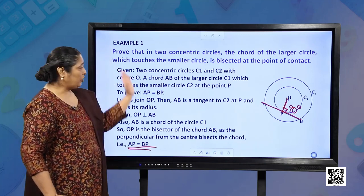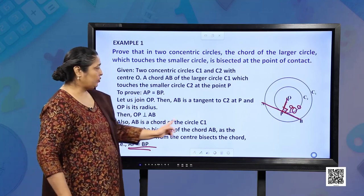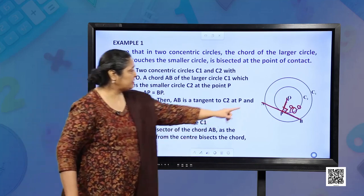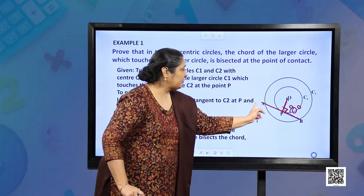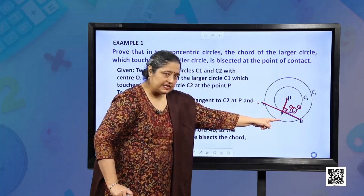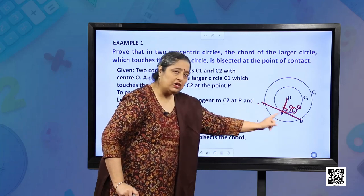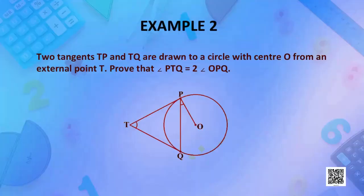Therefore, AP is equal to BP. The only concept we have used is that since OP is the radius and AB is the tangent, OP is perpendicular to AB.